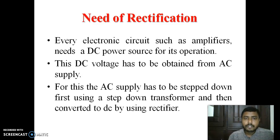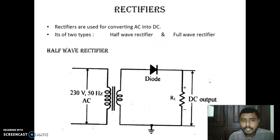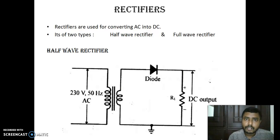We need rectification because AC always changes its direction, and we must convert it to a unidirectional signal. We will not go into detail about the half-wave and center-tapped full-wave rectifiers here — you should study those yourself. We will cover the details of the bridge rectifier, and the basics of the half-wave rectifier will be explained in the next video.